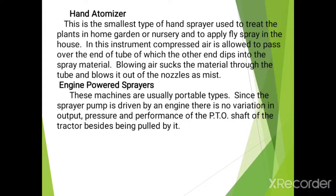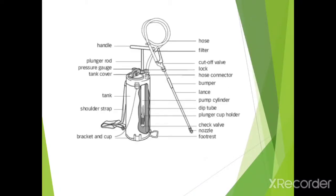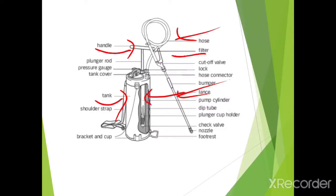The next type is the compression sprayer. It consists of an air pump mounted in an air-tight chamber which is filled about three-quarters with the spraying material. Pressure is developed by pumping air into the tank and the spray is forced out under this pressure. The tank capacity usually varies and is typically 14 litres; frequent pumping is required to maintain the pressure. Components shown in the diagram include: filter, hose pipe, lance, handle, tank, pump cylinder, nozzle, check valve, and footrest.